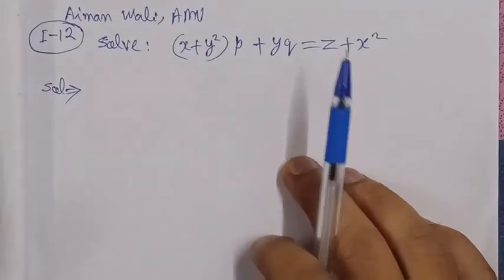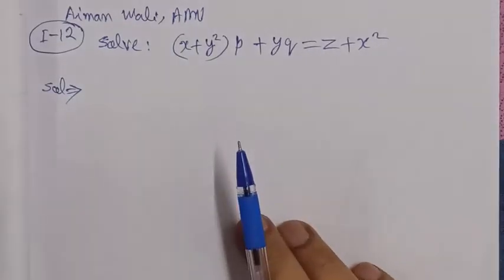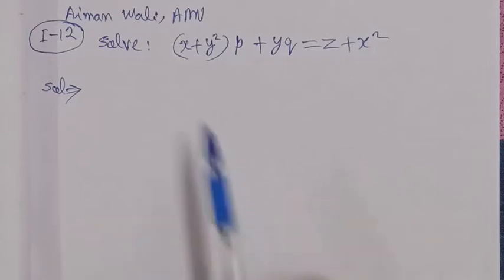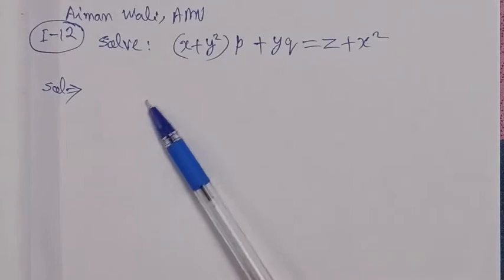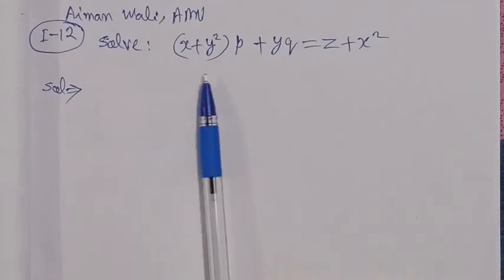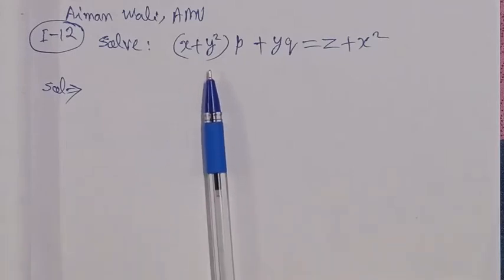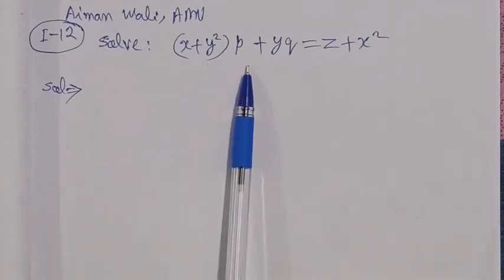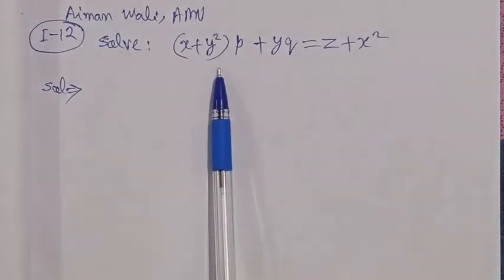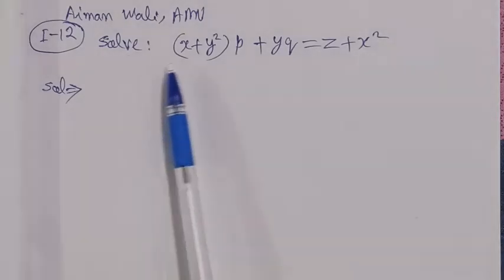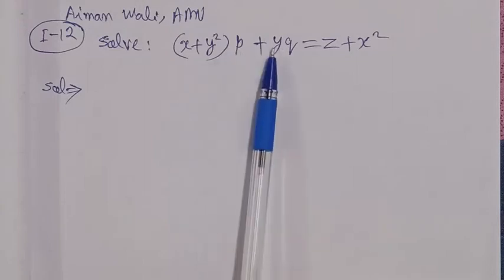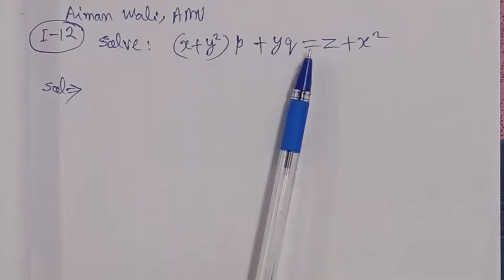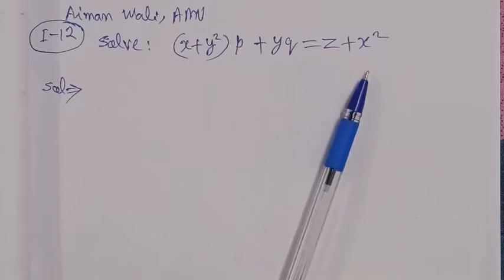Bismillahirrahmanirrahim. On the demand of Ayman Bali from AMU (Aligarh Muslim University), we will solve a first-order partial differential equation: x plus y squared times p, plus y times q, is equal to z plus x squared.